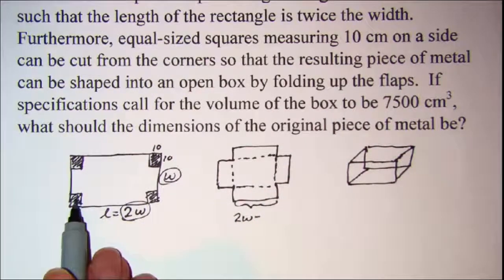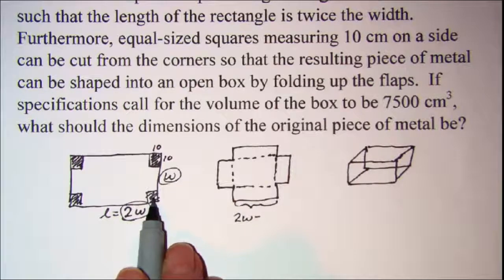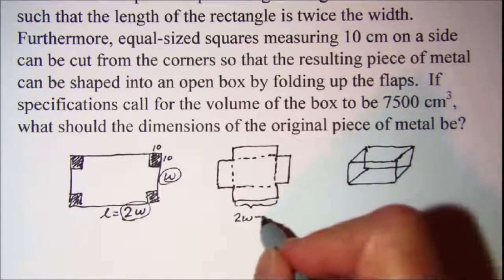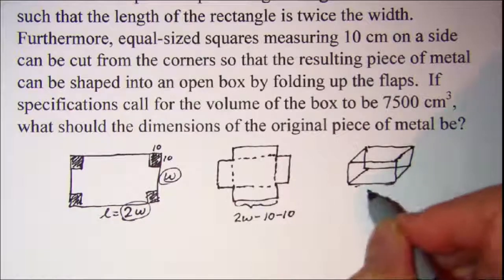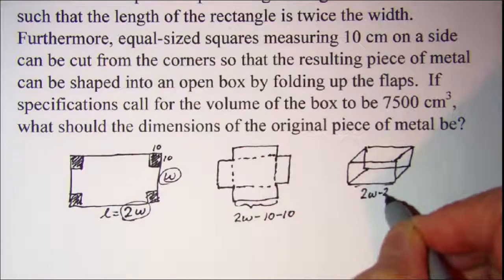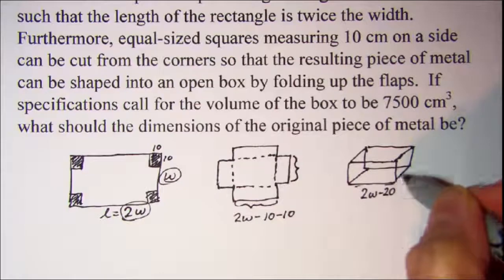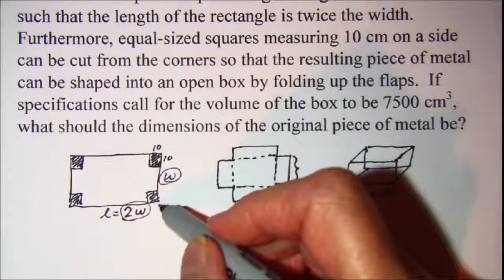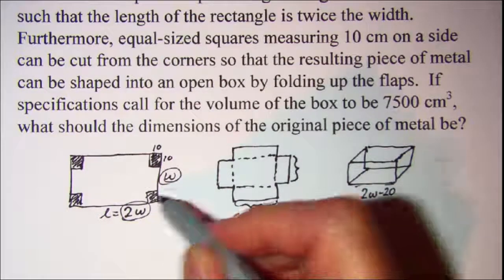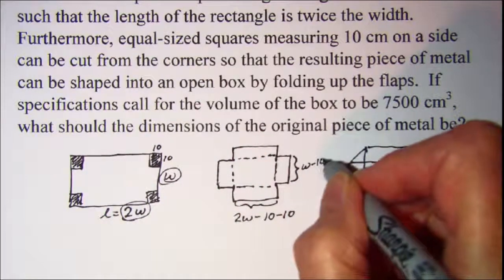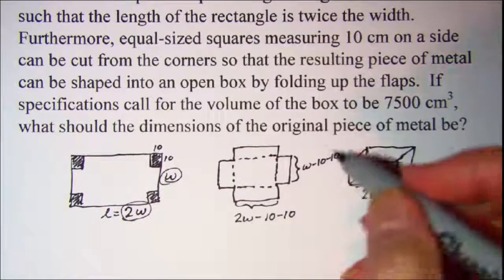Minus the 10 cm I cut from this corner and minus the 10 cm I cut from this corner. So this dimension is 2W minus 10 minus 10, which gives me 2W minus 20. This dimension is my original width, and again I'm cutting away 10 cm for this square and 10 cm for this square, so this dimension is W minus 10 minus 10, or W minus 20.